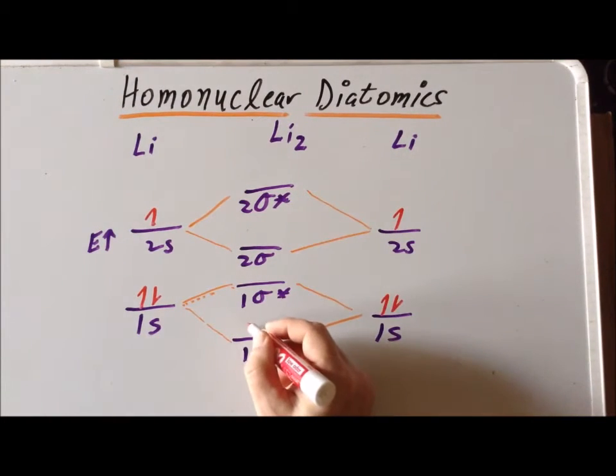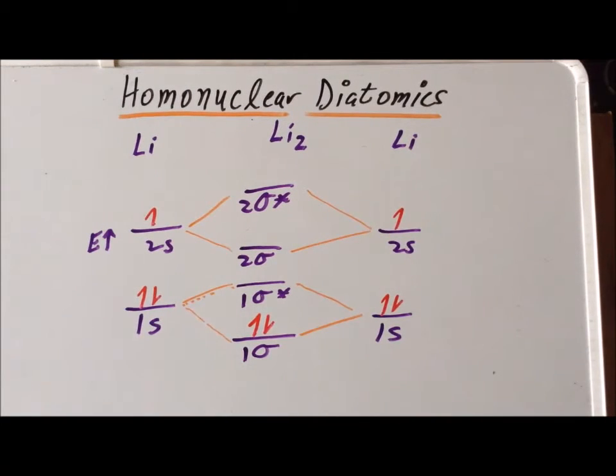The first two electrons will go into the first sigma bonding orbital. We have to fulfill the Pauli exclusion principle in which we can only place two electrons in the same orbital if they have opposite spins.